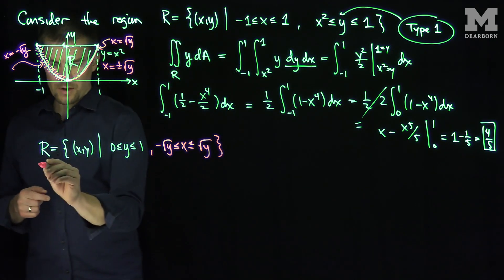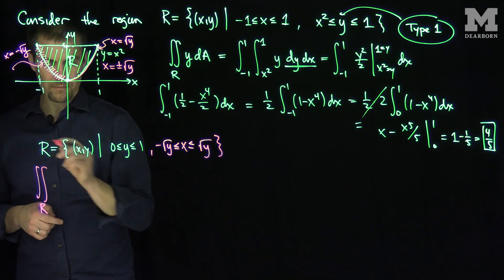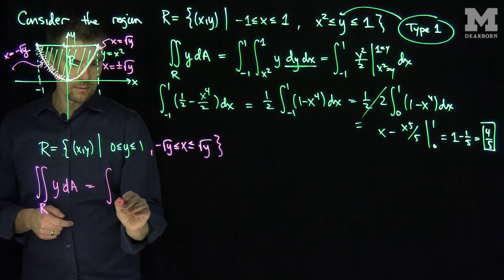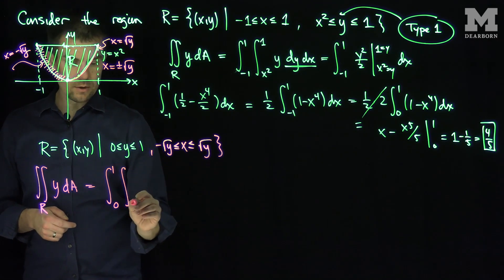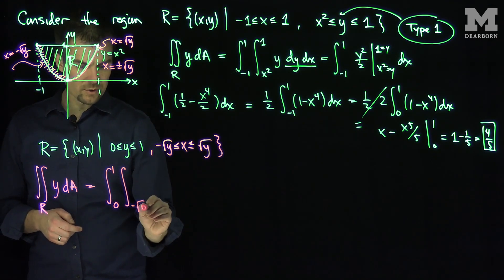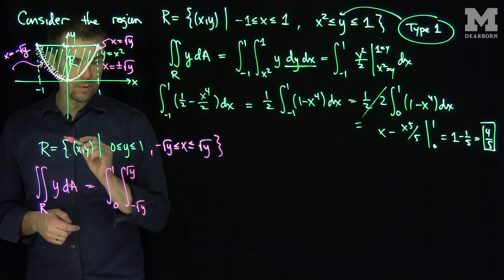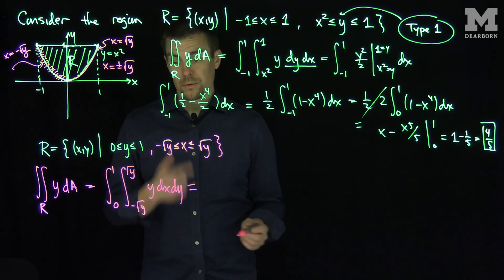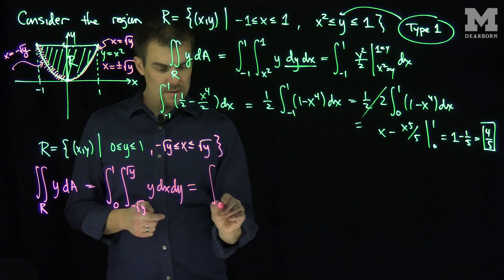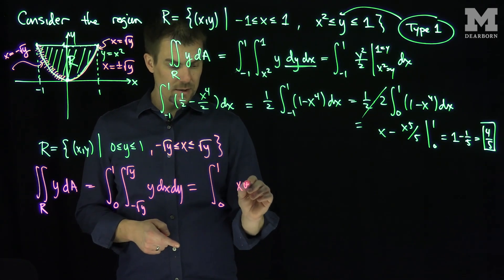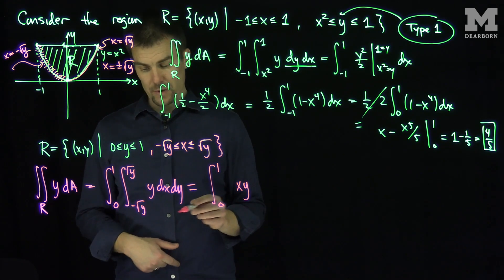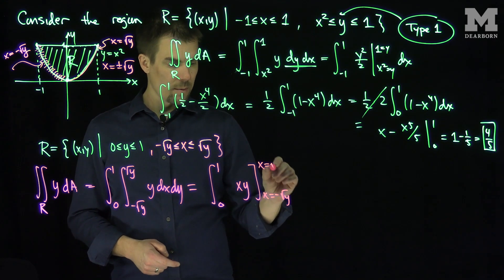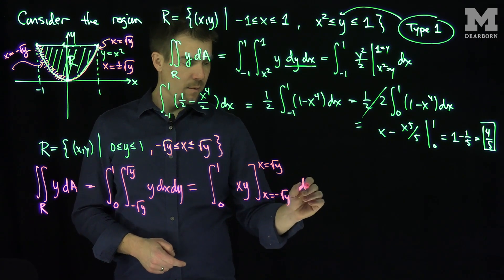Now let's do the double integral. The double integral over R of y dA will be the integral where y goes between 0 and 1, and x goes between negative square root y and square root y. Then I have y dx dy. With respect to x, that's very easy to integrate. The integral from 0 to 1 will give x times y — because there's no x in the integrand — so it just turns into x times y, with x going from negative root y to positive root y, then dy.